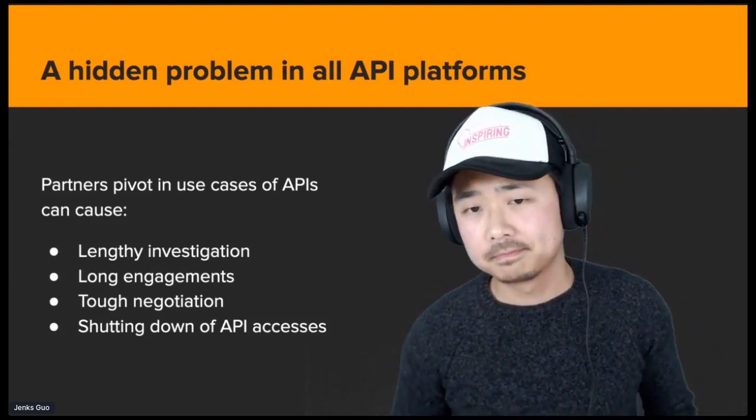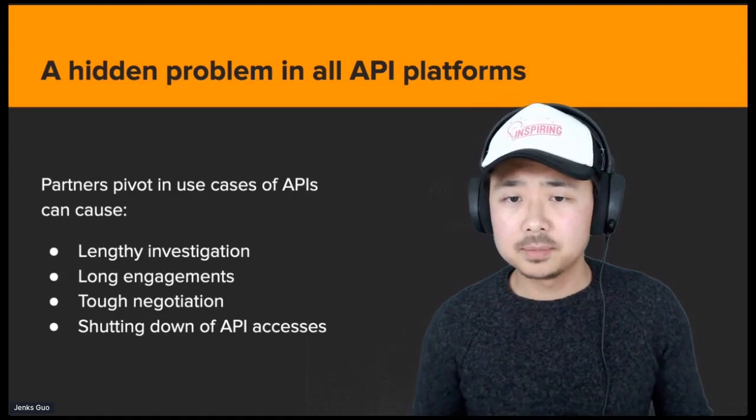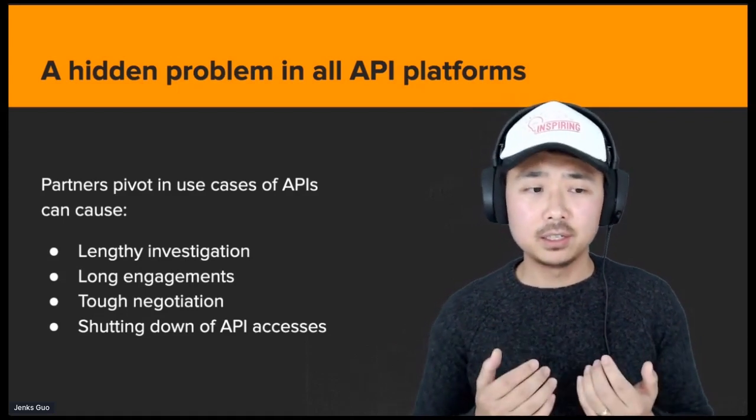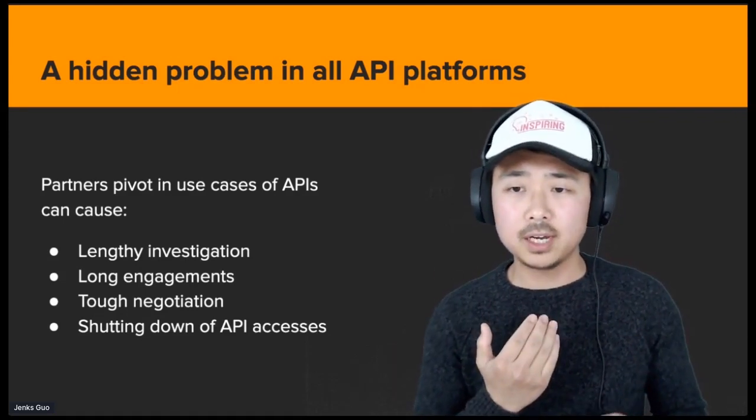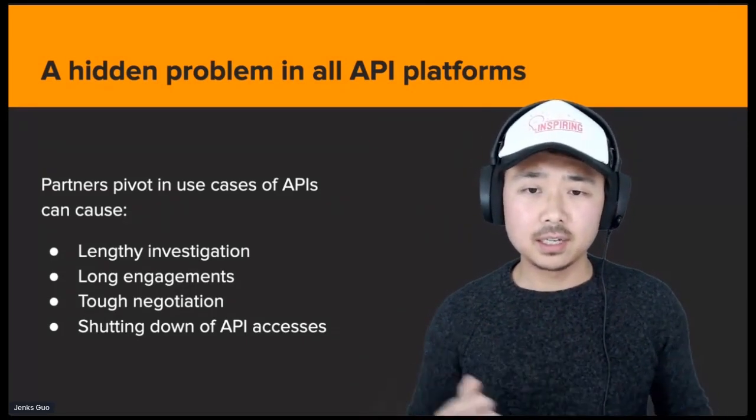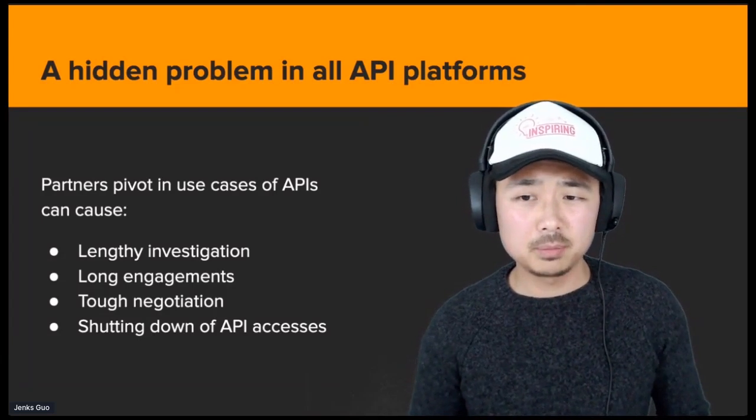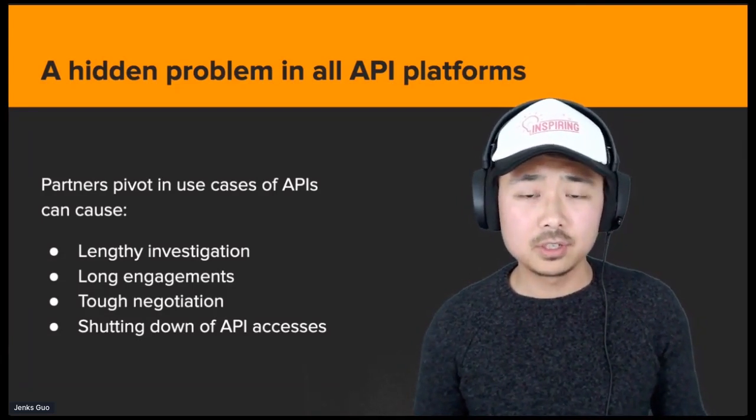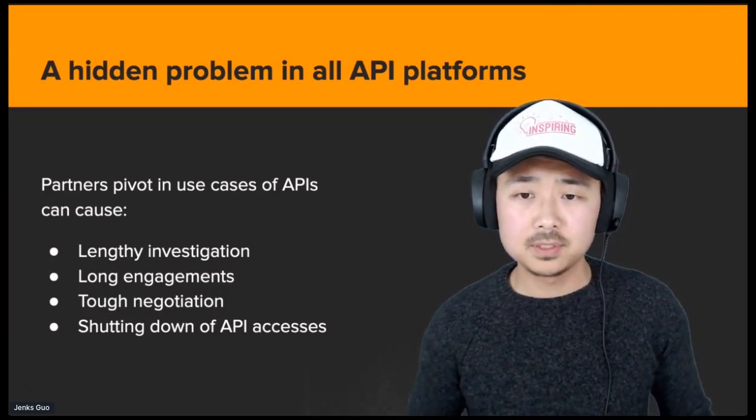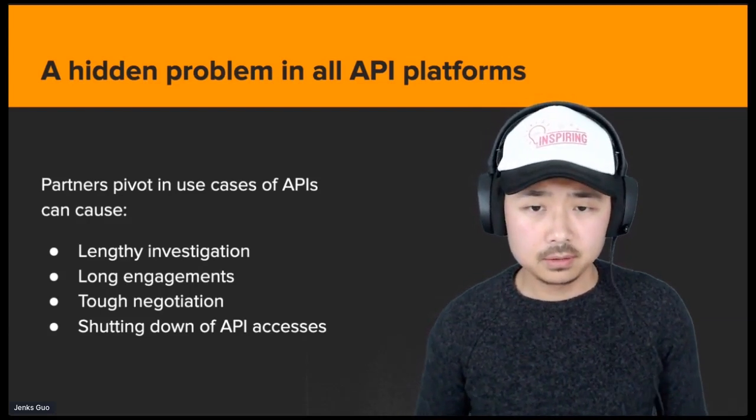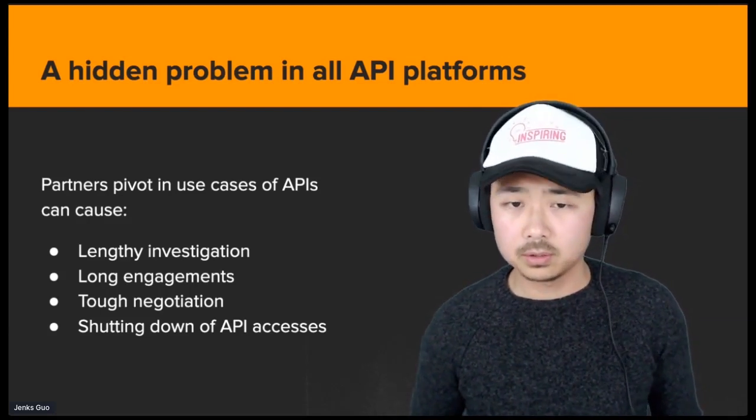For example, if we're a CRM system and we have a conversion partner who brings a lot of customers to us, but now they suddenly start to read a lot of data from our API platform, which indicates they might be turning people off. Or maybe they have started a service to back up the CRM system. Would you allow it? Should you need to talk to them about it?